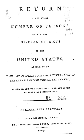Black or African American: a person having origins in any of the black racial groups of Africa. It includes people who indicate their race as Black or African American, or provide written entries such as Kenyan, Nigerian, or Haitian. American Indian and Alaska Native: a person having origins in any of the original peoples of North and South America including Central America and who maintain tribal affiliation or community attachment.